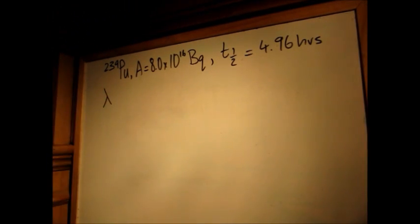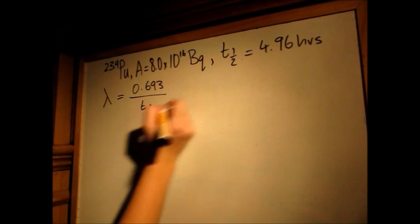First, we find the decay constant: 0.693 over the half-life.